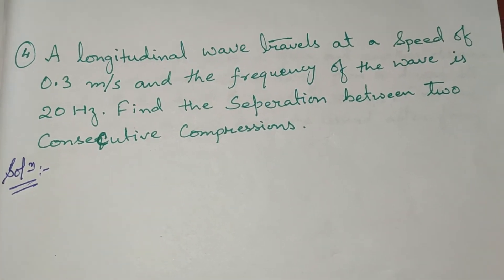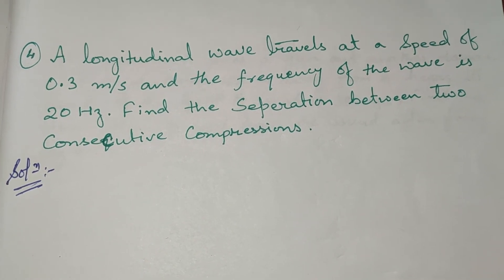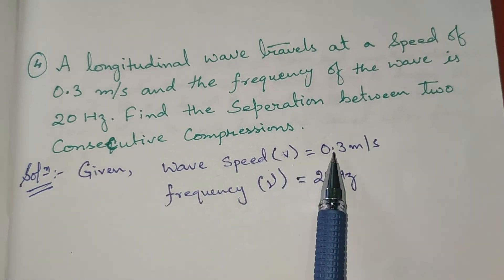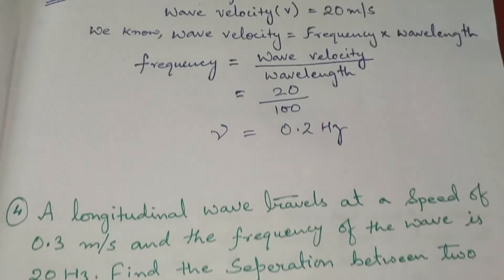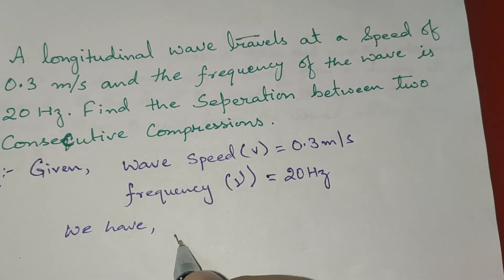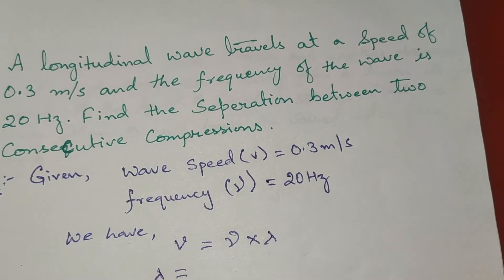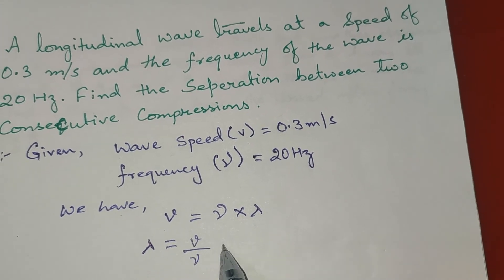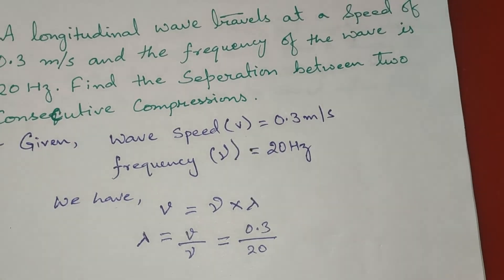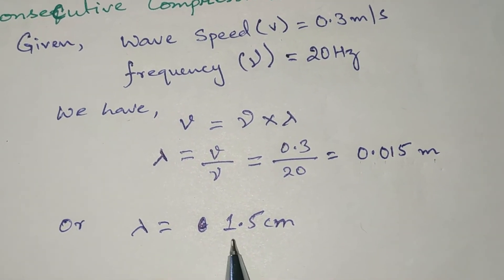The next question says a longitudinal wave travels at a speed of 0.3 meters per second and the frequency is 20 hertz. Find the separation between two consecutive compressions — that is, find the wavelength. Wave speed V = 0.3 m/s, frequency ν = 20 Hz. Using wave velocity = frequency × wavelength, we rearrange: λ = V ÷ ν = 0.3 ÷ 20 = 0.015 meters, or 1.5 centimeters.